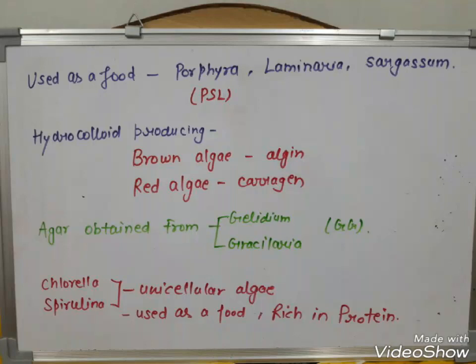Algae as food: Porphyra, Laminaria, and Sargassum are used as food — the trick is PSL. Brown algae produce hydrocolloids. Carrageenan and agar are obtained from Gelidium and Gracilaria. Chlorella and Spirulina are unicellular algae used as food and are rich in nutrients.